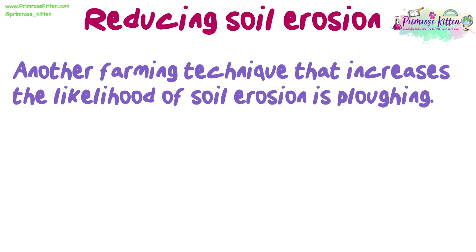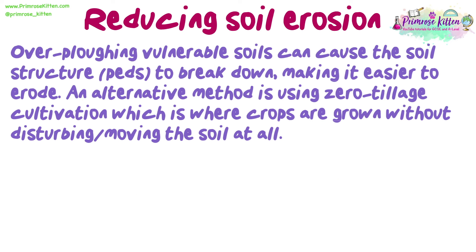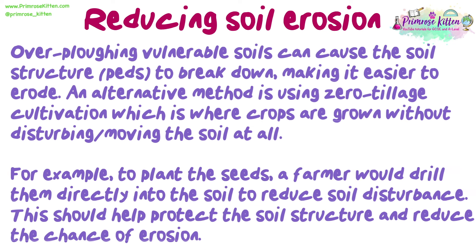Another farming technique that increases the likelihood of soil erosion is ploughing. Farmers plough their soil to aerate it and encourage aerobic processes such as decomposition and nitrification that increase fertility. However, overploughing vulnerable soils can cause the soil structure, or the peds, to break down, making it easier to erode. An alternative method is zero tillage cultivation, where crops are grown without disturbing or moving the soil at all. For example, to plant seeds, a farmer would drill them directly into the soil to reduce soil disturbance, helping protect the soil structure and reduce the chance of erosion.